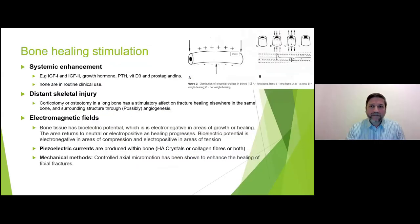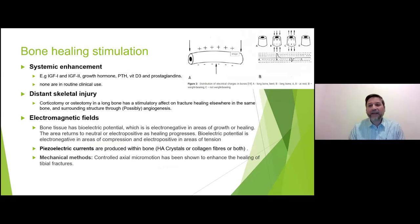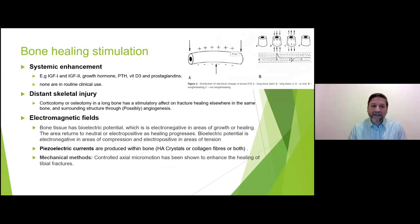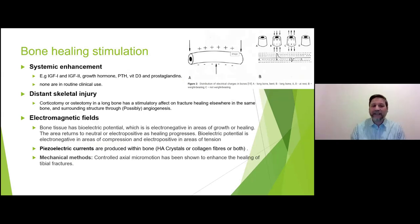The last section is bone healing stimulation — methods to encourage and nudge bone into healing. These include systemic enhancement, distant skeletal injury, and electromagnetic fields. Systemic enhancement is when you give the patient something parenterally or orally that is supposed to go to the fracture area and encourage healing.